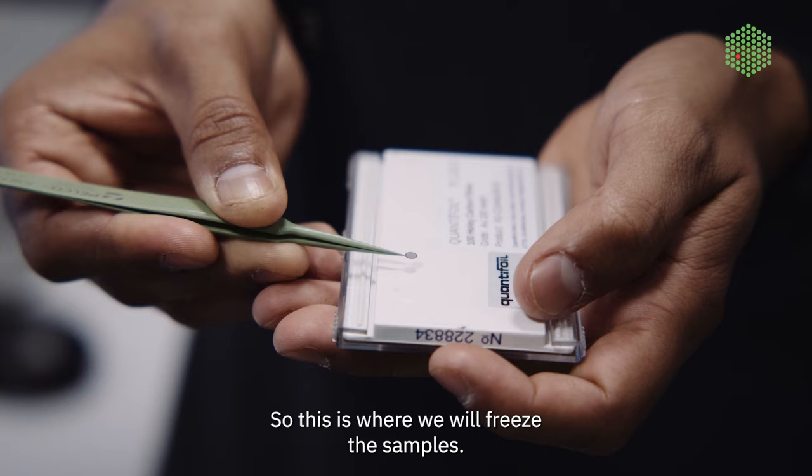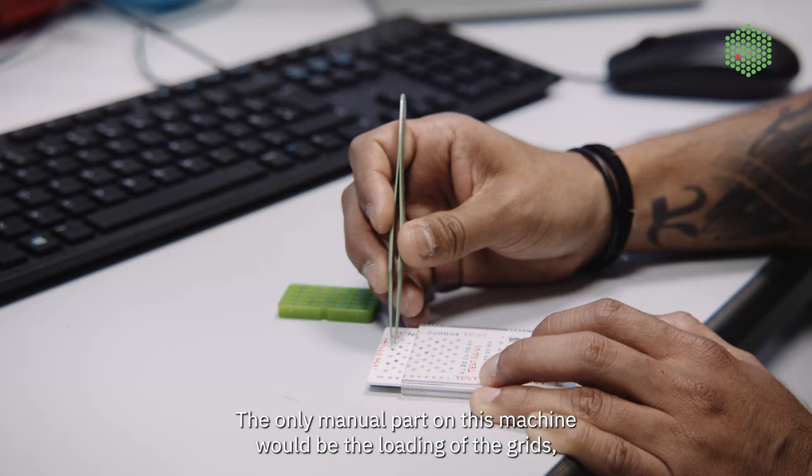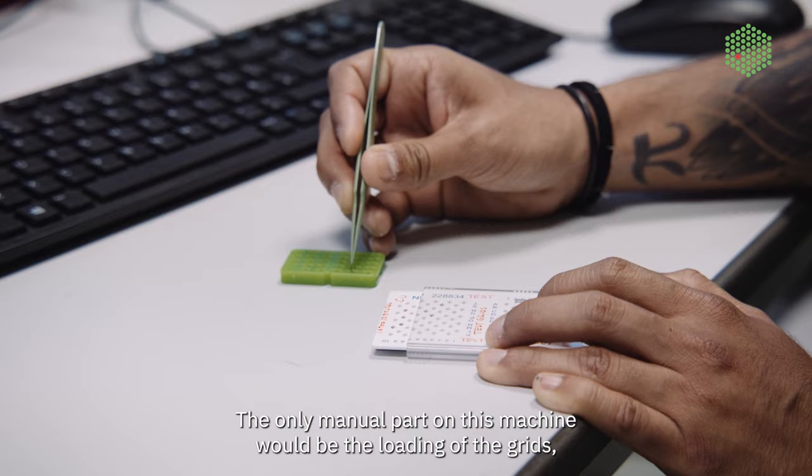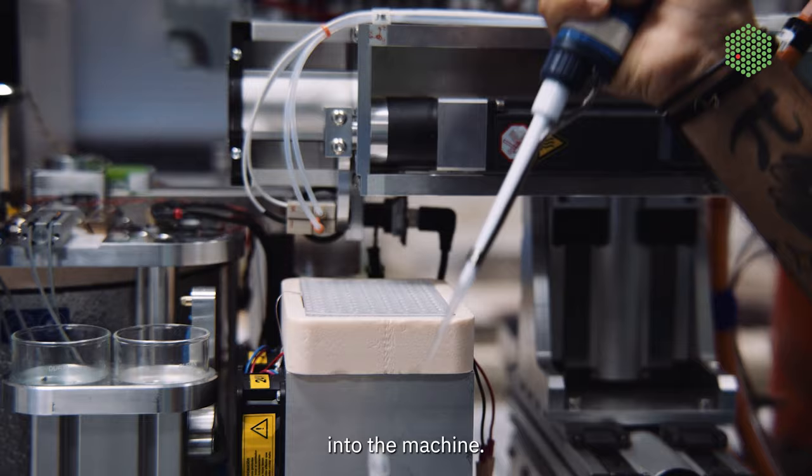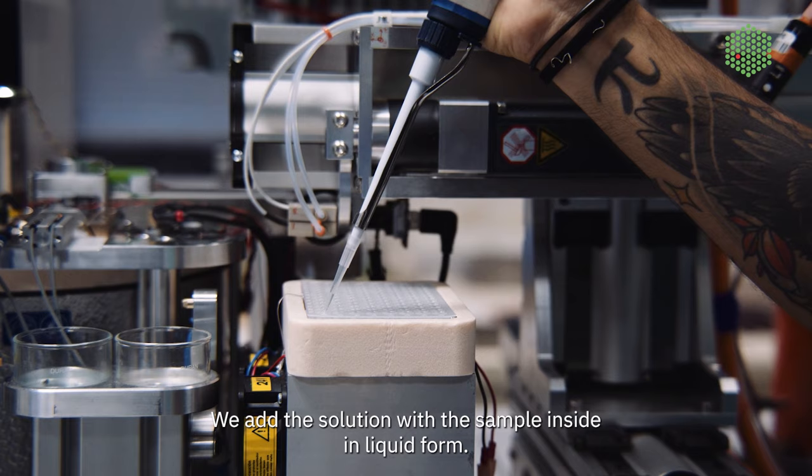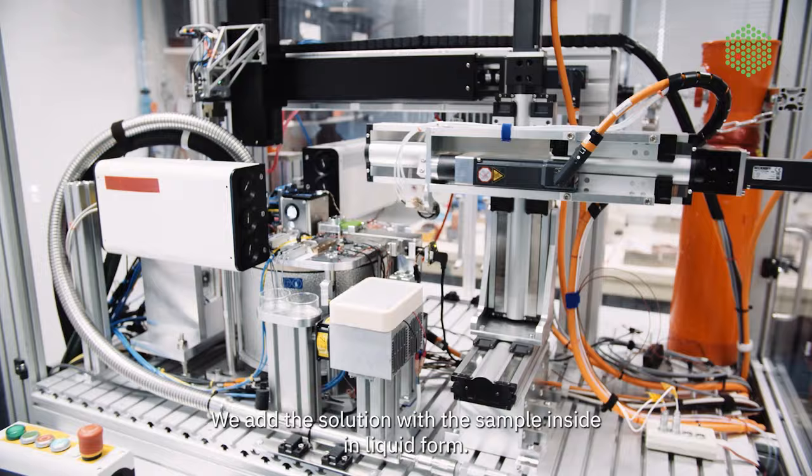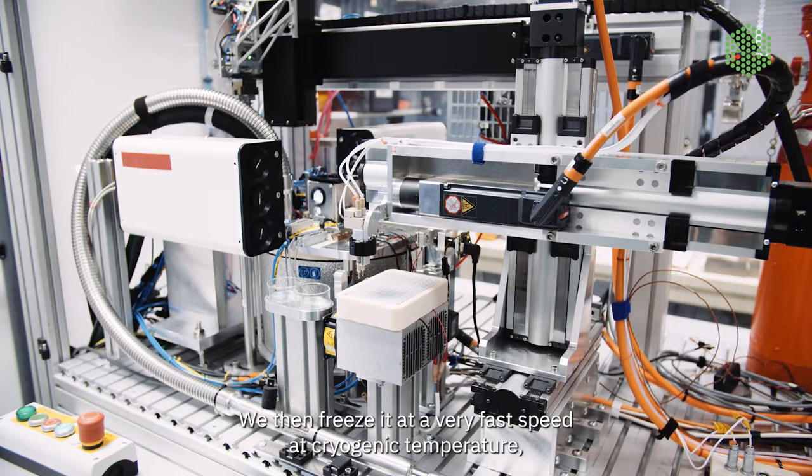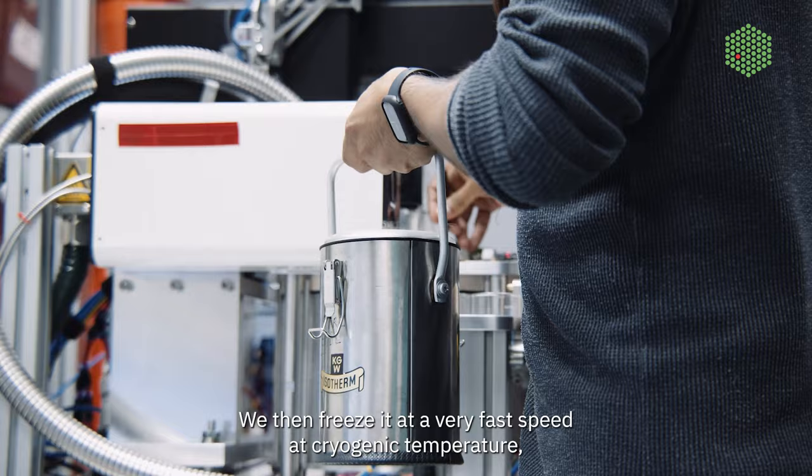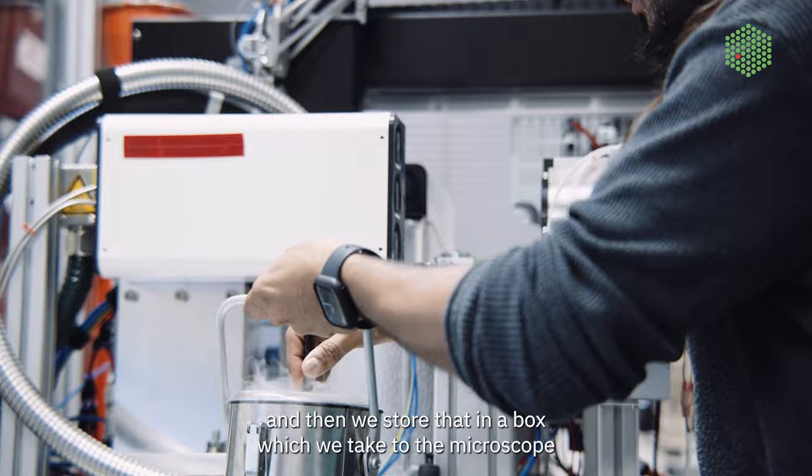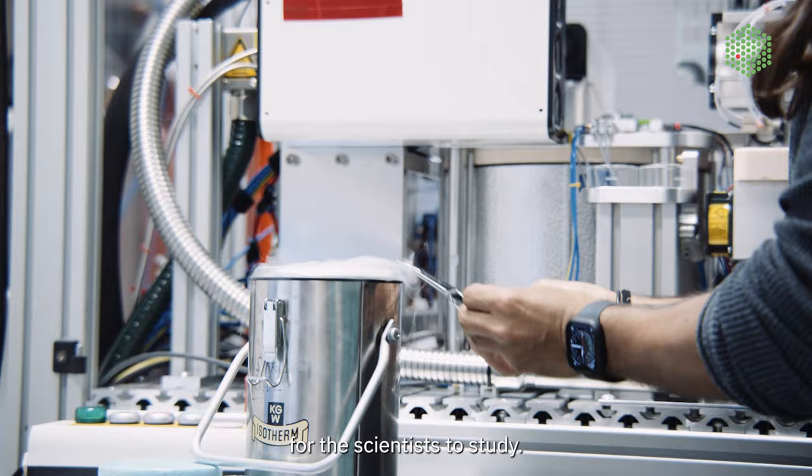So this is where we will freeze the samples. The only manual part on this machine would be the loading of the grids. And then just load them into the machine. And we add the solution with a sample inside in liquid form. We then freeze it at a very fast speed at cryogenic temperature. And then we store that grid on a box, which we take to the microscope for the scientists to study.